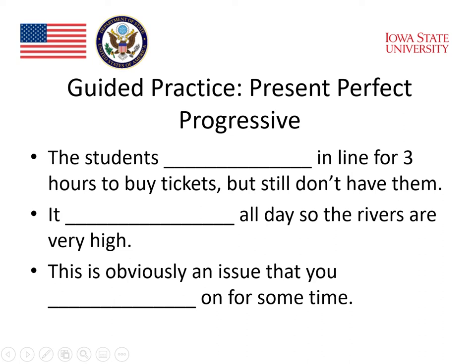The third sentence: 'This is obviously an issue that you have been _____ on for some time.' What verb works with 'on'? Work. In the present perfect progressive: 'This is obviously an issue that you have been working on for some time.'